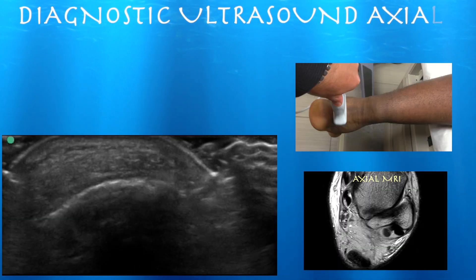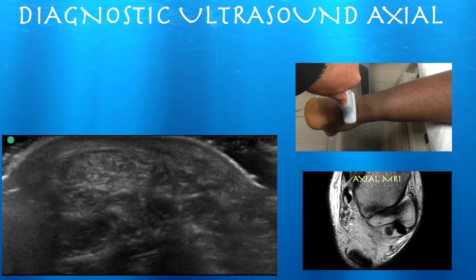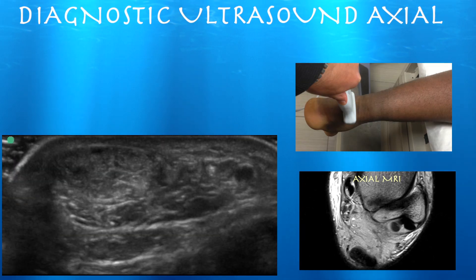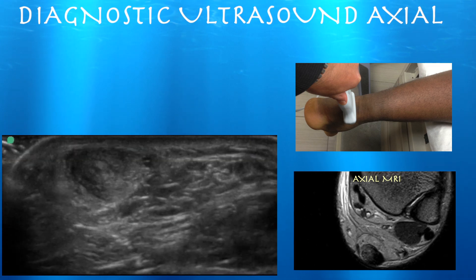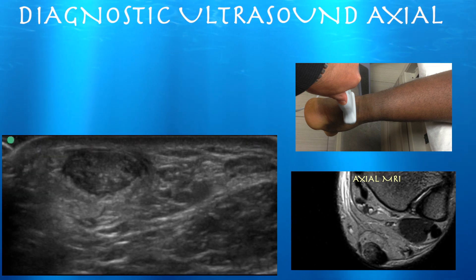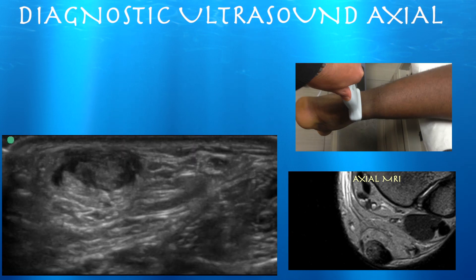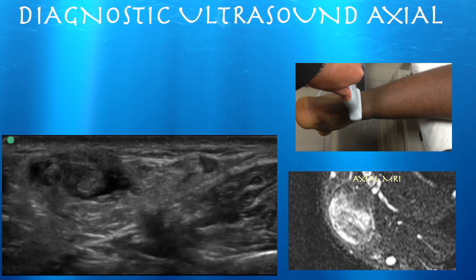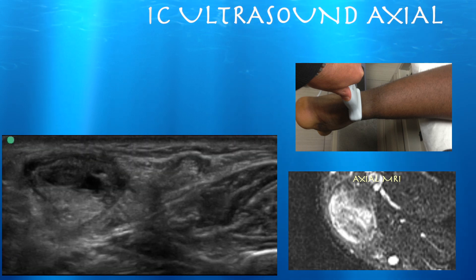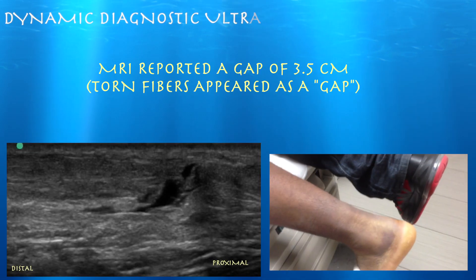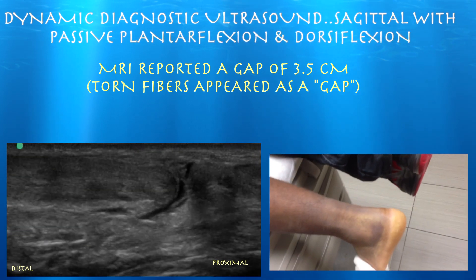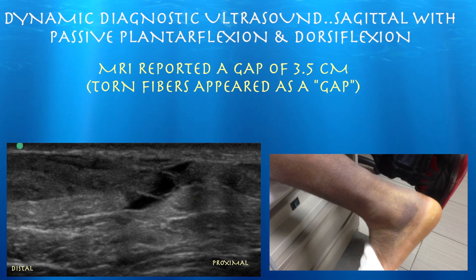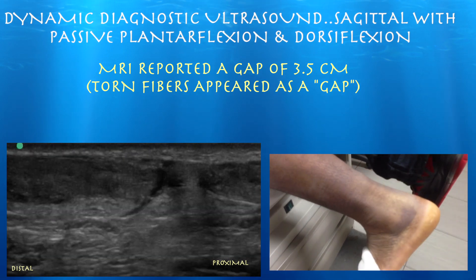On axial view, the distal Achilles tendon looks fairly well preserved, and as we go proximal we can see the tear. Here we are essentially in the zone of the tear — all that black and dark signal is essentially blood filling up that gap. With active motion, you can see the two ends of the tear come within about a millimeter of each other. This is why we were able to treat him conservatively, and he did quite well.